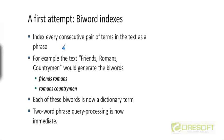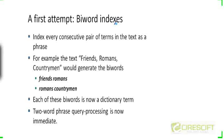That's actually the second solution. Let's first discuss a simpler solution to handle phrase queries, and it's something called a biword index. A biword index is just an index in which the dictionary, instead of storing single terms, is going to store pairs of consecutive terms.